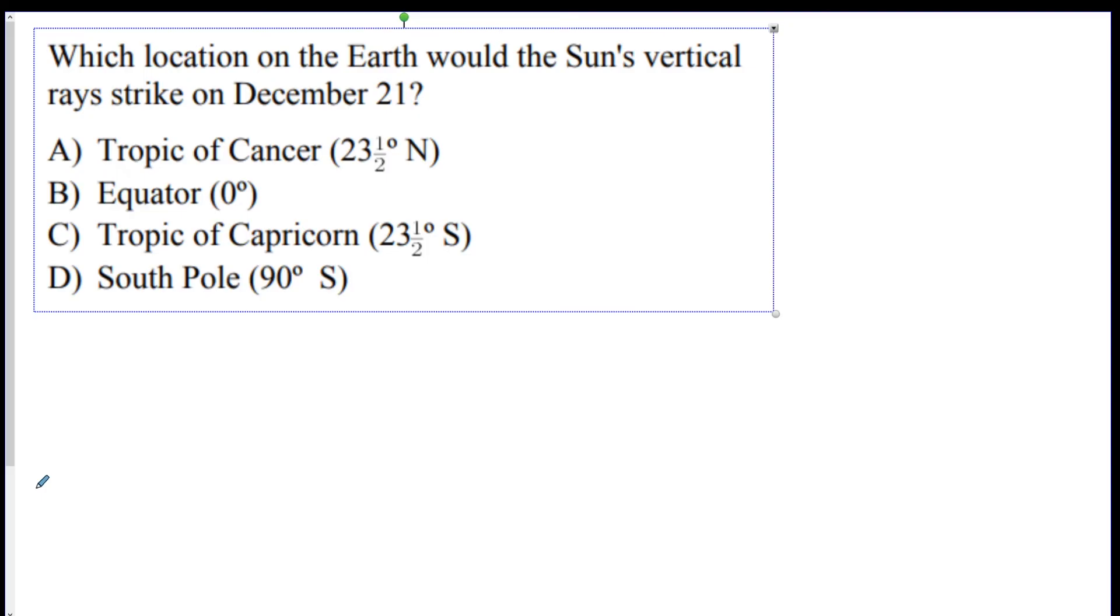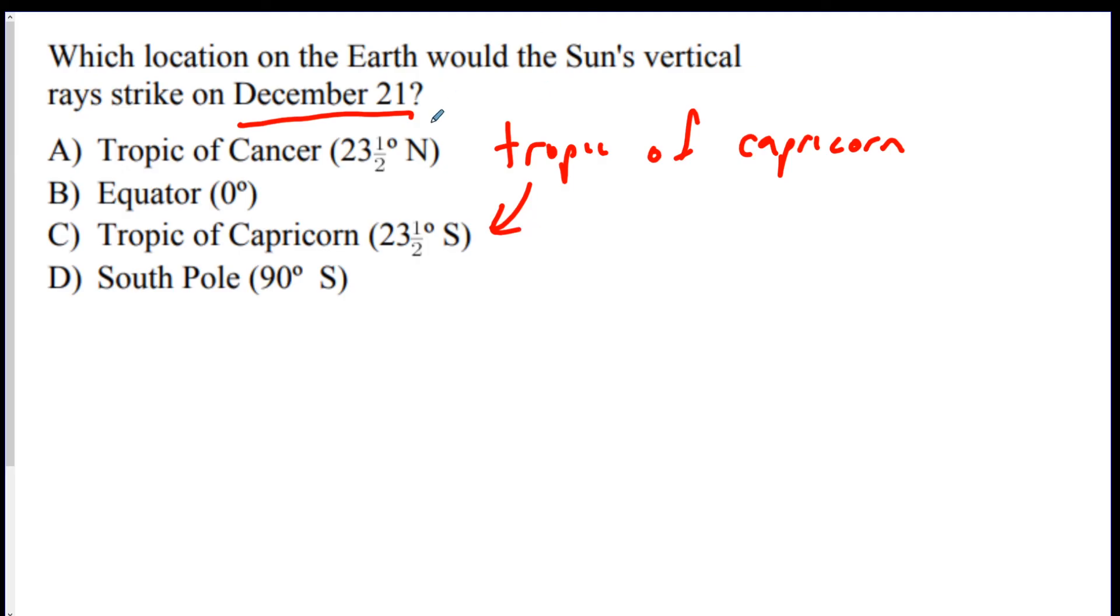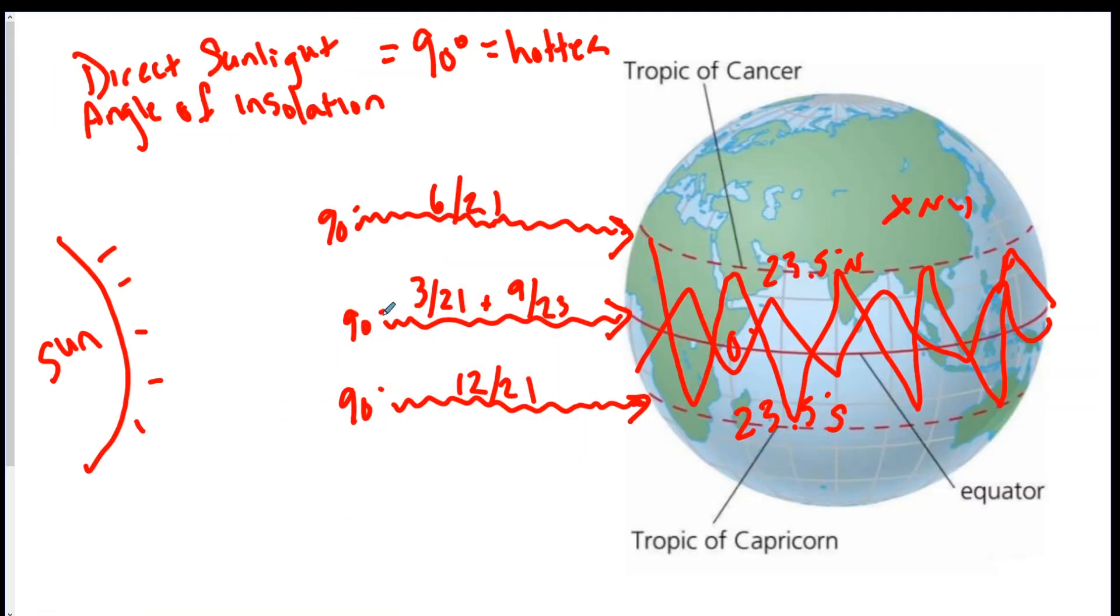Which location on the Earth? On December 21st, you're going to have the Tropic of Capricorn as the direct rays. If you're confused on questions like this, go back in the video to this little chart and study this. June 21st, Tropic of Cancer. 3/21, 9/23, the equator. 12/21, Tropic of Capricorn. You're going to have to remember them.